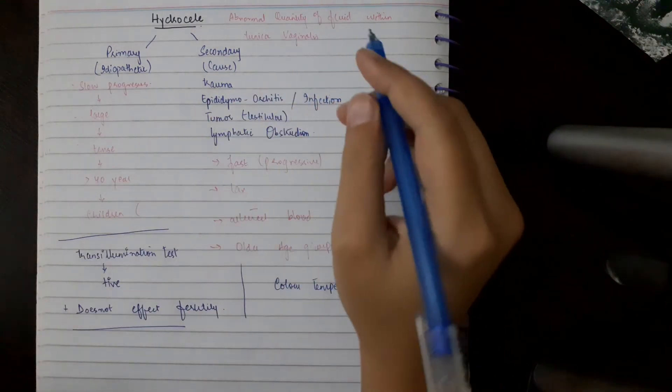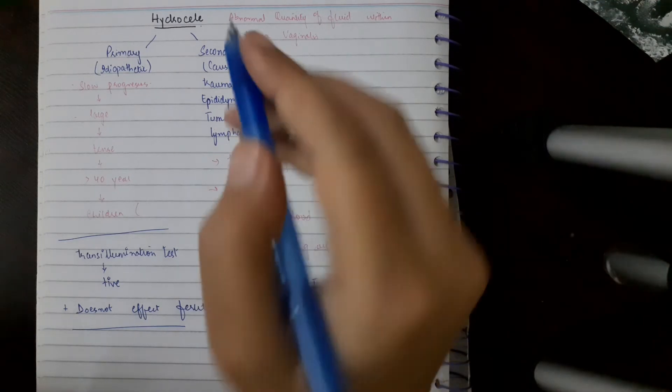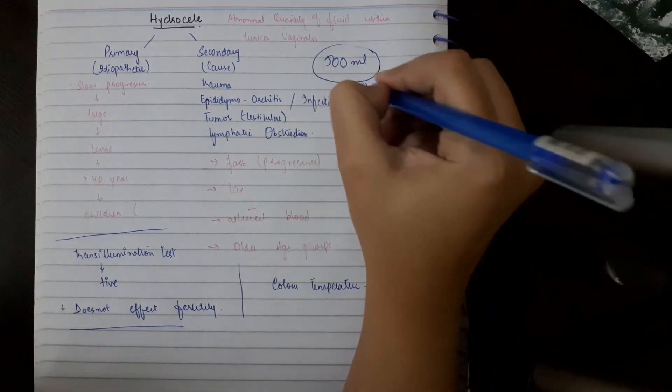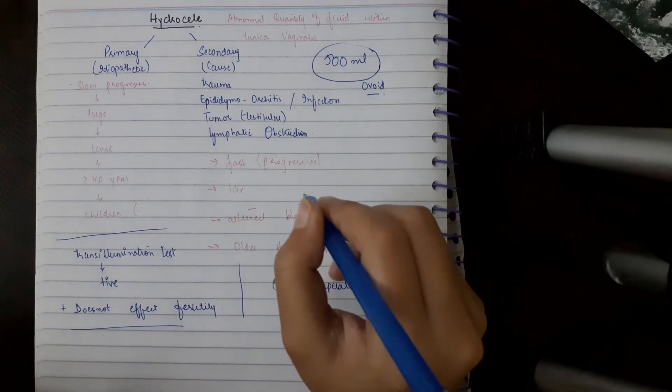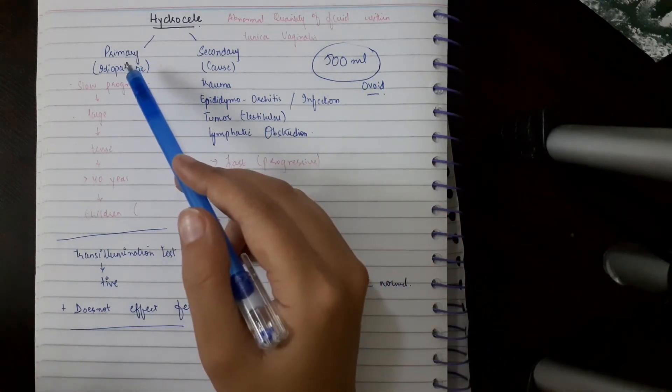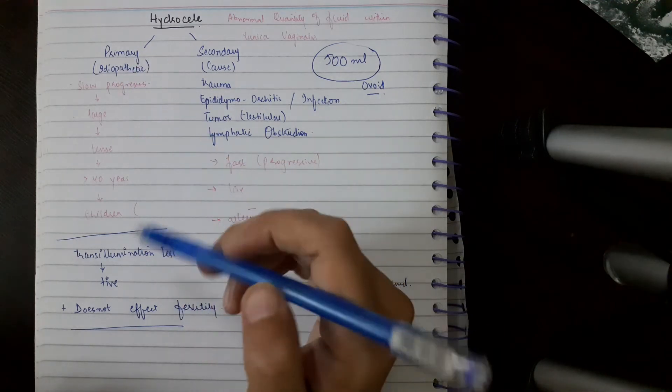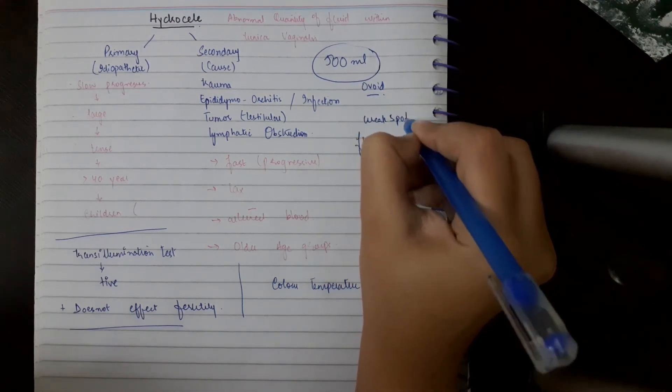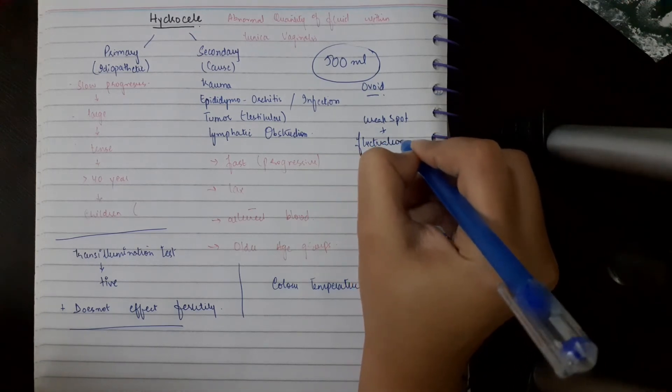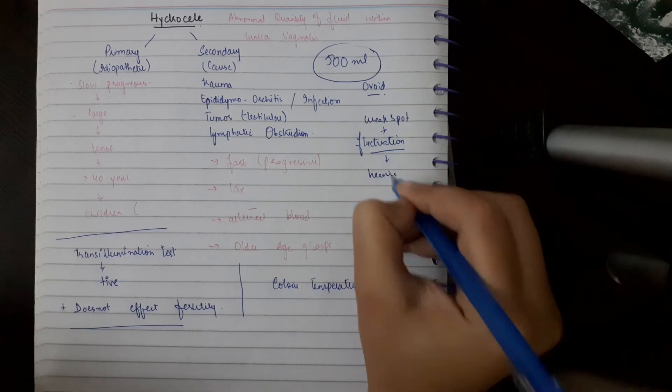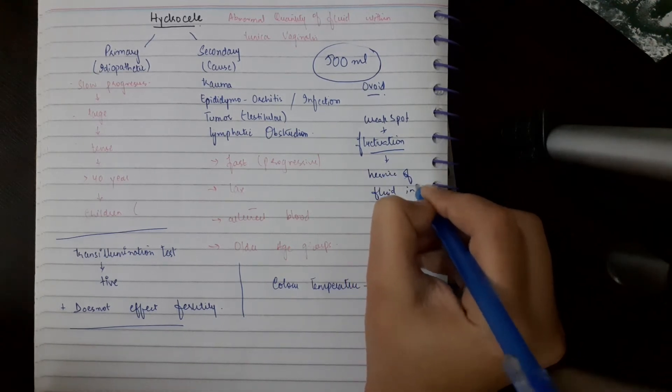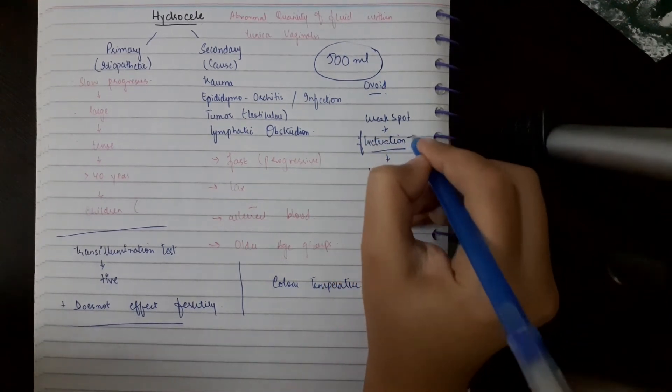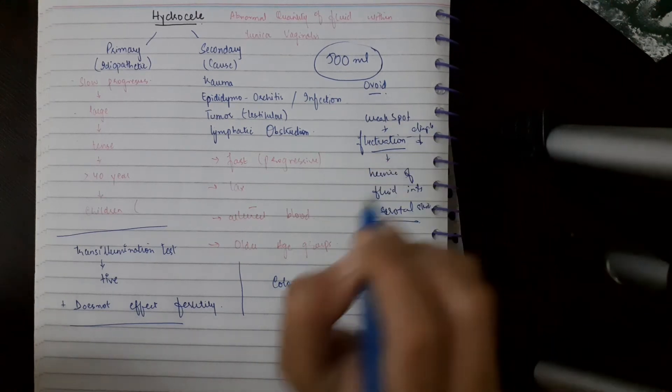The hydrocele size can be enormous, and almost 500 ml of fluid can be accumulated in the scrotum. It is ovoid in shape. The surface is smooth and well-defined, and the weak spot is present where fluctuation can occur. Fluctuation is like almost a hernia of the fluid into the scrotal skin. A dimple is present whenever you press it with the finger.